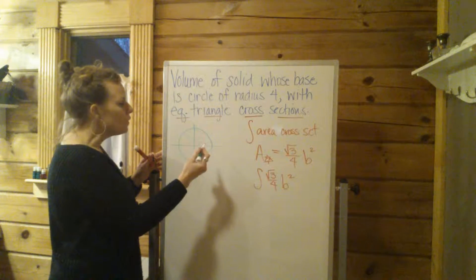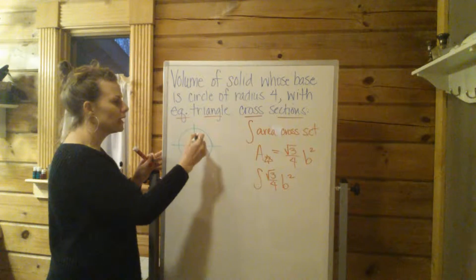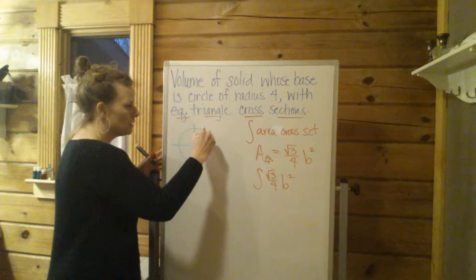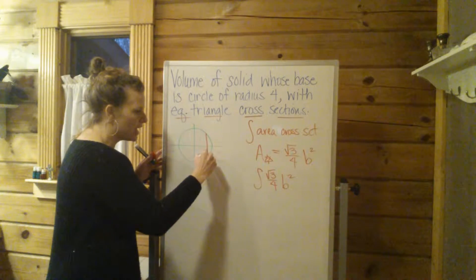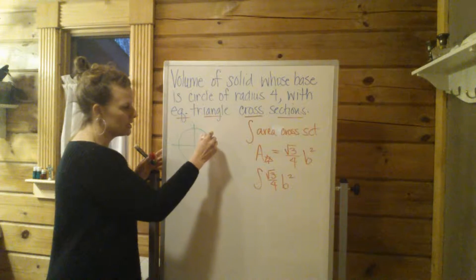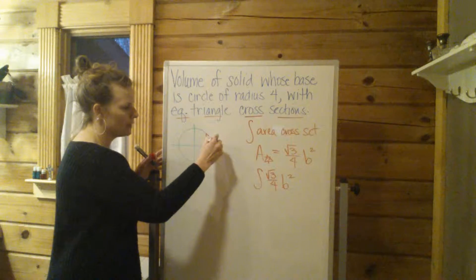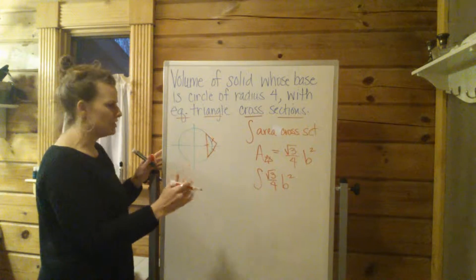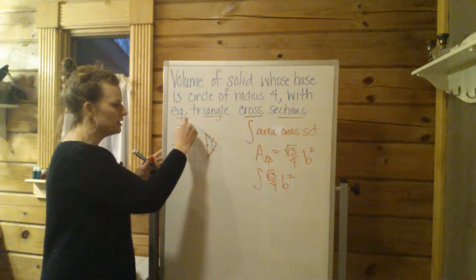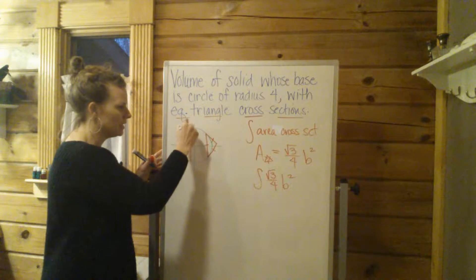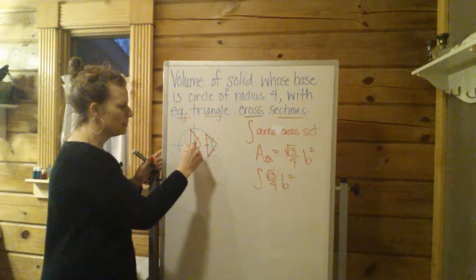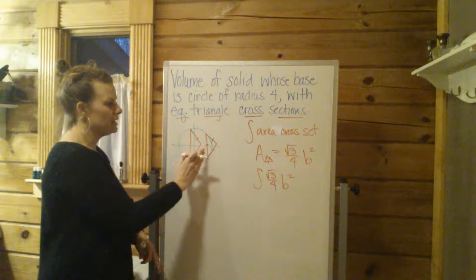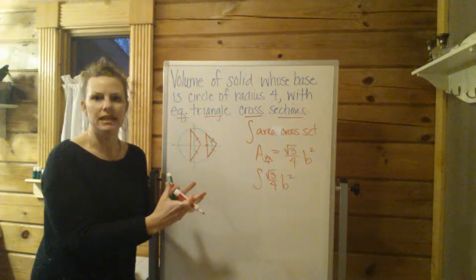So then what we're going to have is we have these cross sections that are equilateral triangles. So if you can imagine the base of the triangle is going to lie across the circle and then the triangles are going to come out at you three dimensionally like that. If you can visualize that it's kind of hard to imagine. But so there's one of your cross sections, another cross section you'll have down here. Let's say these triangles are coming up at you three dimensionally. So those are your cross sections that you're going to be basically adding up an infinite number of.